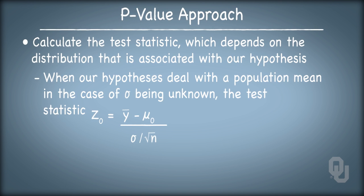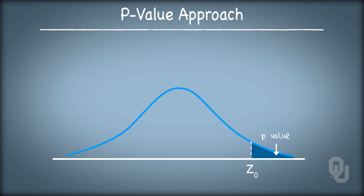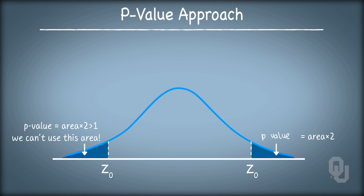In the fourth step, we diverge a bit from the critical value approach and calculate for the test statistic what is called the p-value. The p-value is the area under the distribution above or below the test statistic for the appropriate tail associated with the alternative hypothesis. If the test is a lower tail test, the p-value is the area under the distribution below the test statistic. If the test is an upper tail test, the p-value is the area above the test statistic. If the test is a two-tail test, the p-value is the area in the tail associated with the test statistic multiplied by two, making sure that the p-value doesn't get bigger than one, as it's a probability after all.